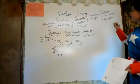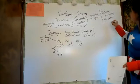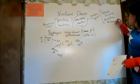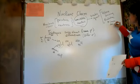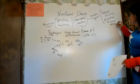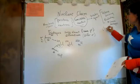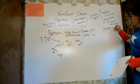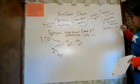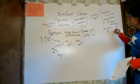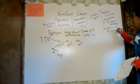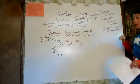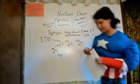Ionizing radiation is something that can cause damage because it can knock electrons out of orbitals. I talked earlier this term a lot about free radicals.